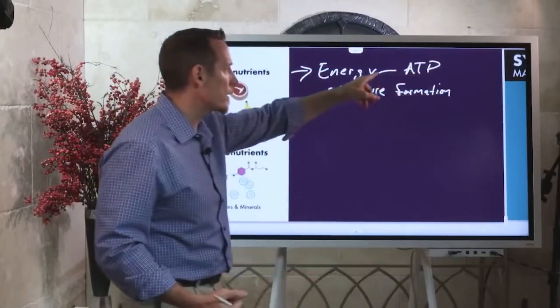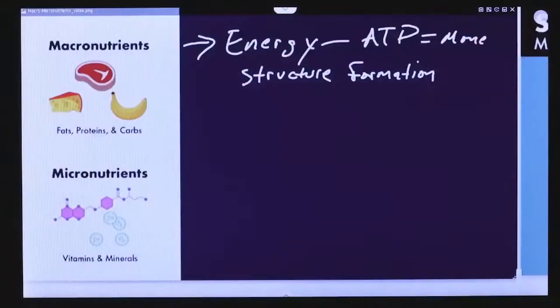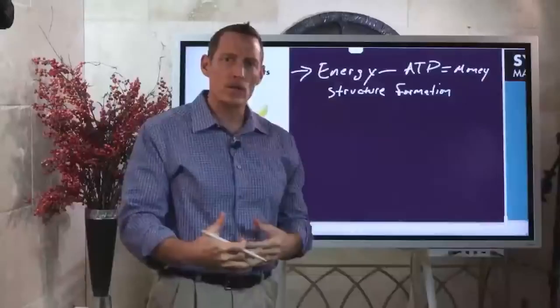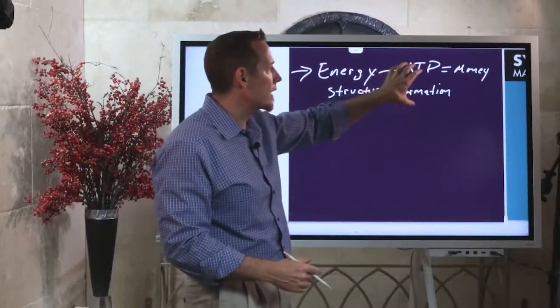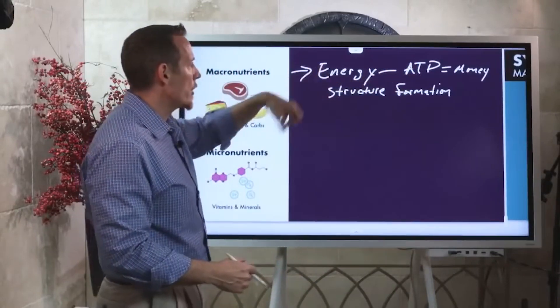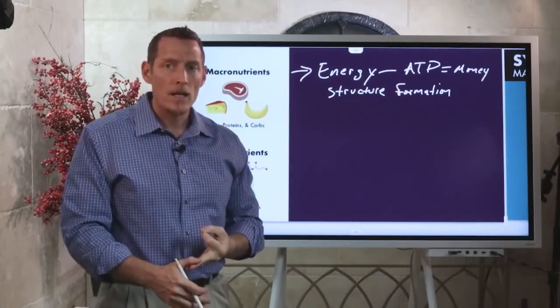ATP is a lot like money in the real world. You need money to buy food, clothing, shelter, and provide for the necessities of life. Well, ATP provides that necessity of energy production in your body so that your body can heal, repair, and maintain its integrity, tissues, and functionality.